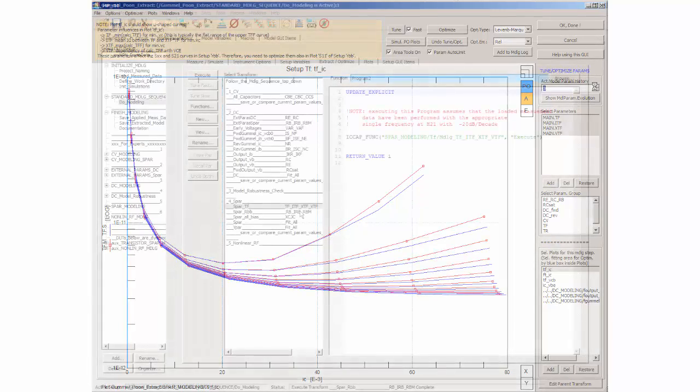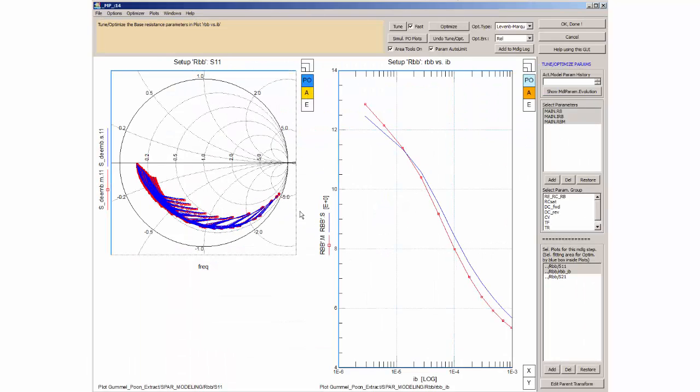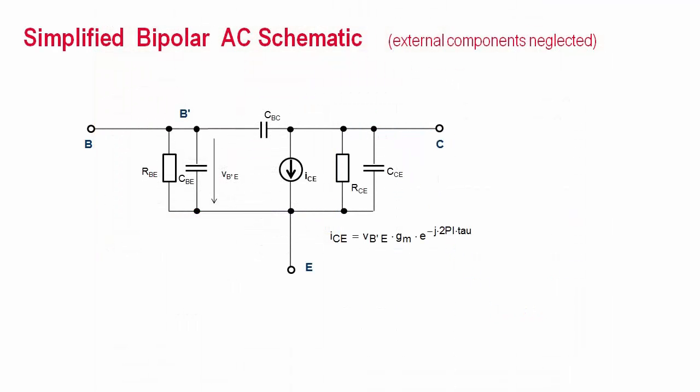As mentioned, the transit time can affect the base resistance modeling. And that's why I am doing the base resistance fine-tuning now, after the transit time modeling. To the left we see the Smith chart of S11, and to the right the endpoints of the traces extrapolated to infinite frequency, which is the curve of RBB. Usually a little fine optimization provides a nice fit.